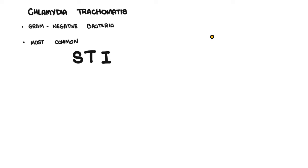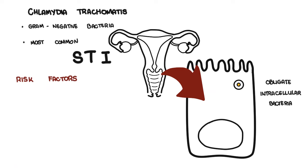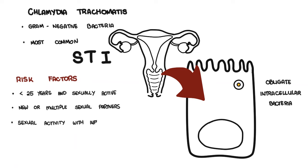Chlamydia is a small gram-negative bacterium that lives as an obligate intracellular bacteria, meaning it cannot reproduce outside the human host cell. The transmission of chlamydia is thought to mostly occur through sexual activity, and therefore the risk factors include being young and sexually active, having new or multiple sexual partners, sexual activity with an infected person, lack of barrier contraception such as not using a condom, and having previous chlamydia infections.